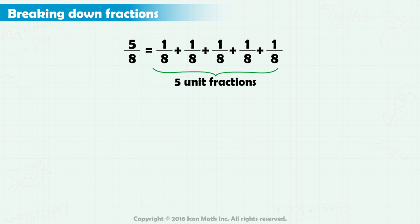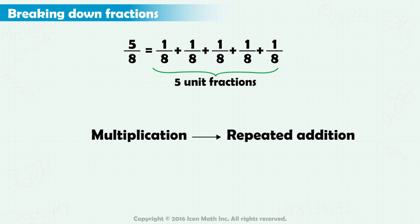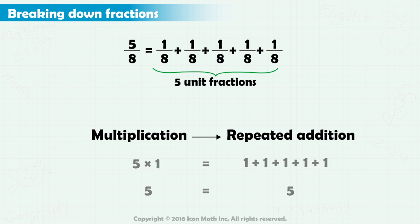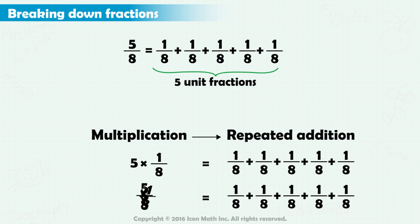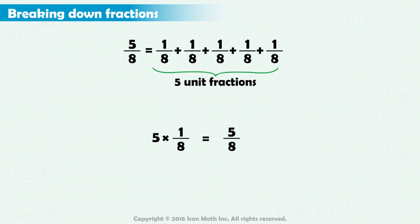At the same time, remember that multiplication could be seen as repeated addition. So, 1 plus 1, 5 times, is equal to 5 times 1, which is equal to 5. Similarly, adding 1 eighth to itself 5 times is simply 5 times 1 eighth. So, the fraction 5 eighths is equivalent to 5 times 1 eighth.